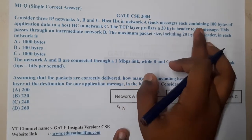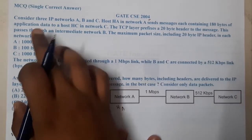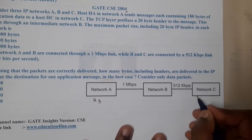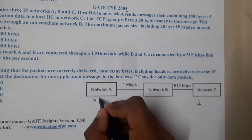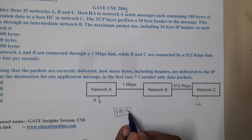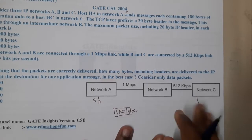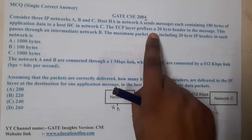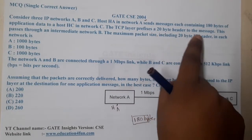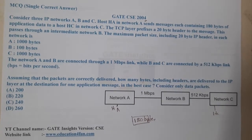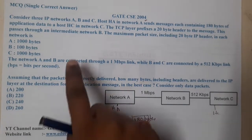Host HA sends a message containing 180 bytes of application data to HC. So from here to here, I want to send 180 bytes of application data to host B. The TCP layer prefixes a 20-byte header to the message, so the TCP header will be 20 bytes.